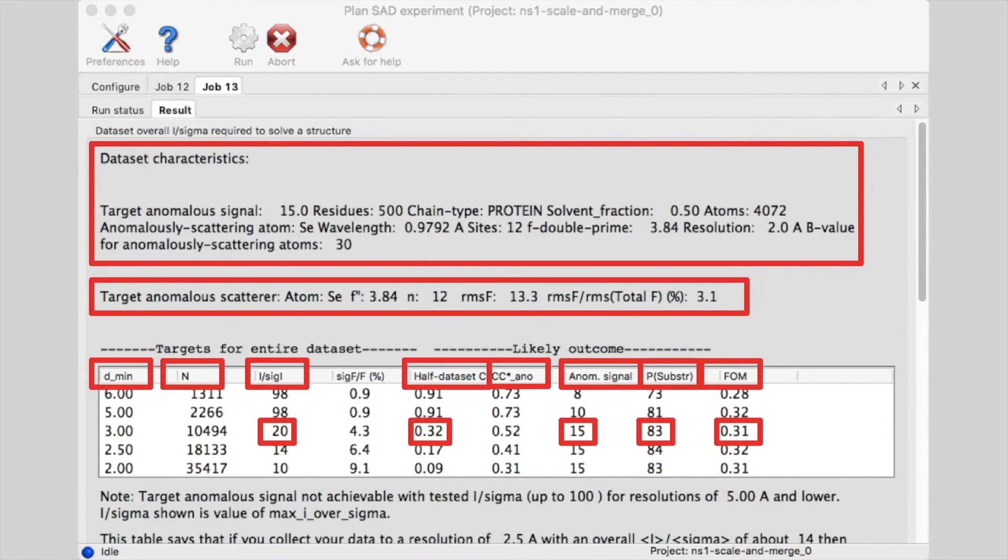And the expected figure of merit would be 0.31. This is using all data to a resolution of 3 angstroms.